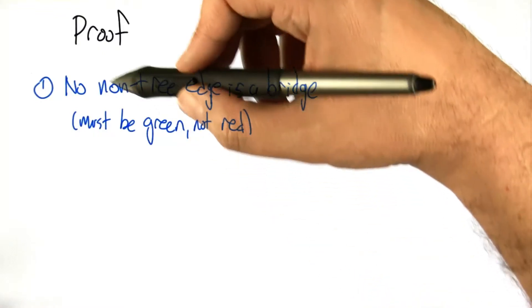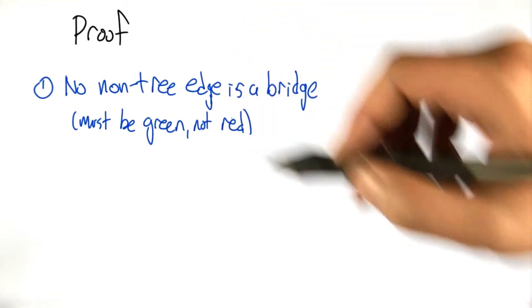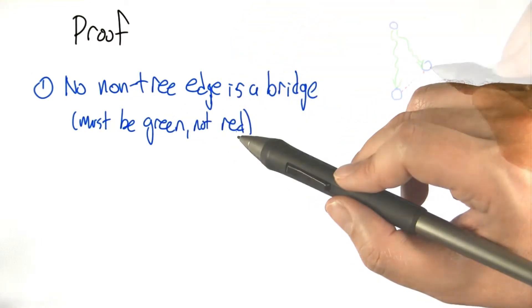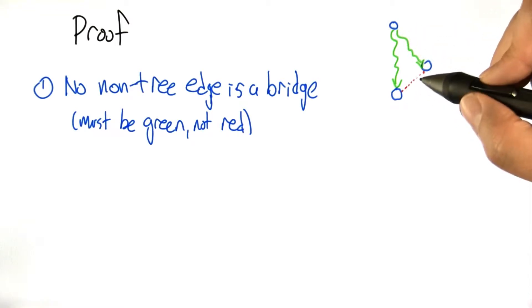The first thing to observe is that no non-tree edge can be a bridge. They have to be the green edges, not the red edges. Why is that? Well, the red edges are the ones that get added for a node that had already been reached by some other path. The red edges can't be bridge edges because deleting the red edge, the nodes on both sides were reachable from the beginning some other way.